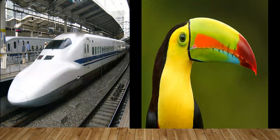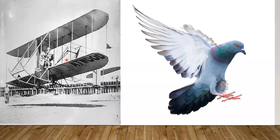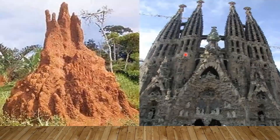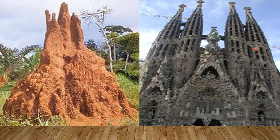Moving to aircraft, the first flying machine heavier than air, from the Wright brothers in 1903, was inspired by the flying pigeon. Coming to the last one, architecture is inspired by termite mounds to design passive cooling structures. So this is about biomimicry.